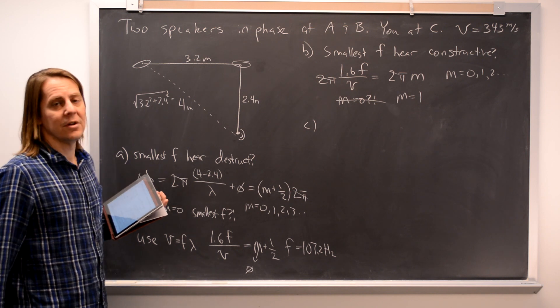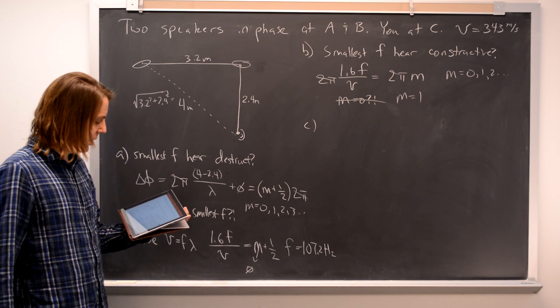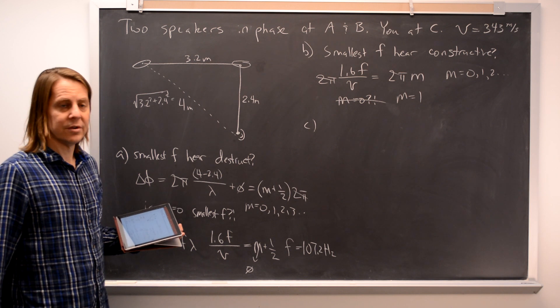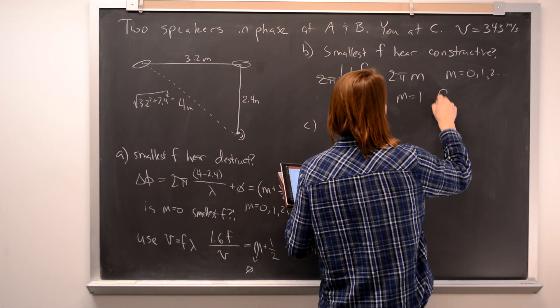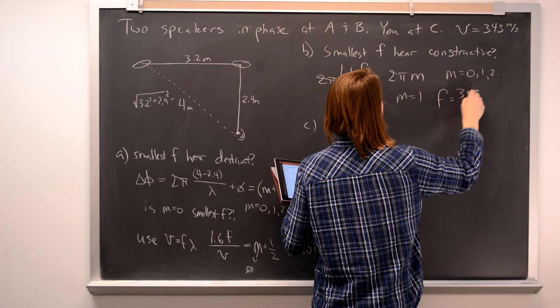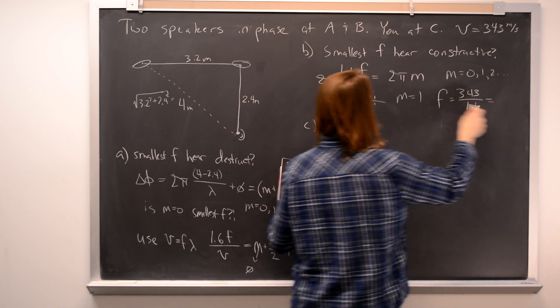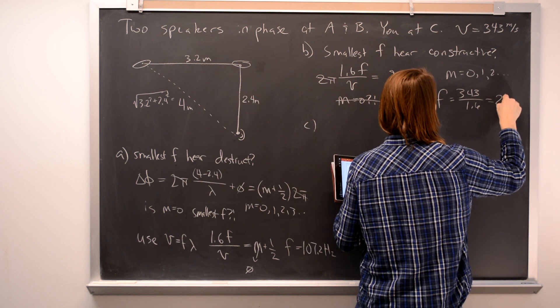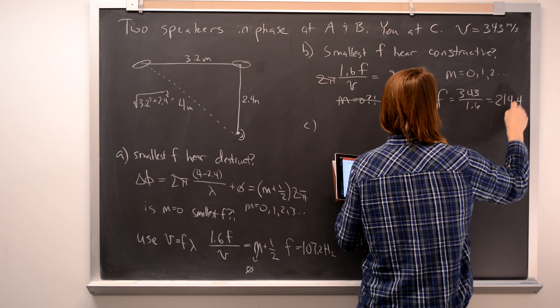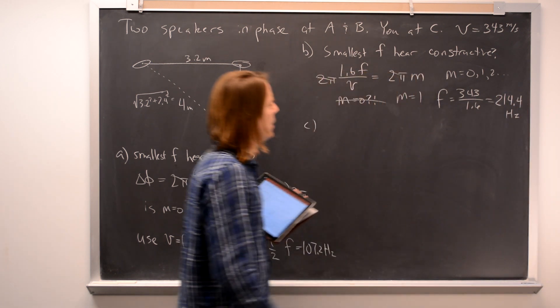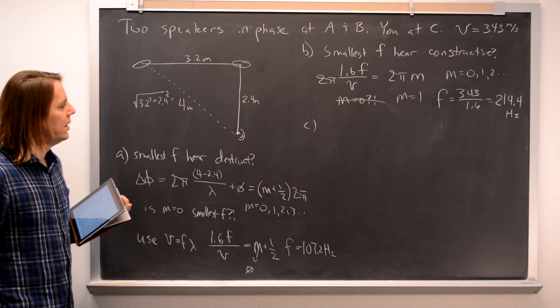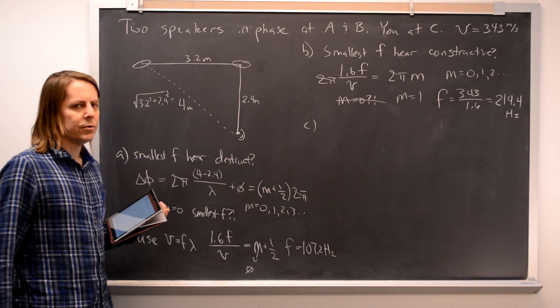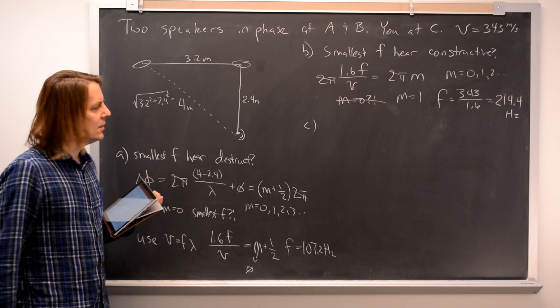So in the end, F is simply V, 343 meters per second, over 1.6. So F is in our new condition, and that answer is 214.4 hertz. So those two are fairly straightforward applications of the interference condition.